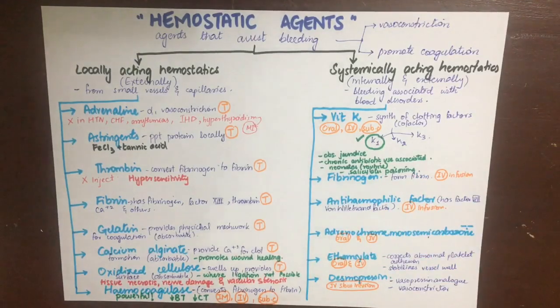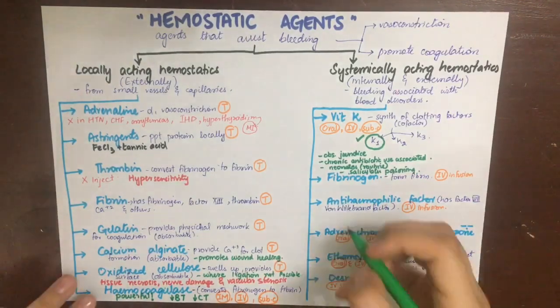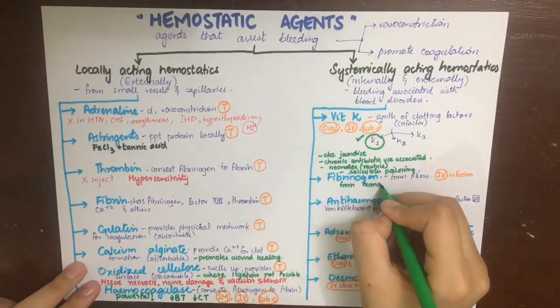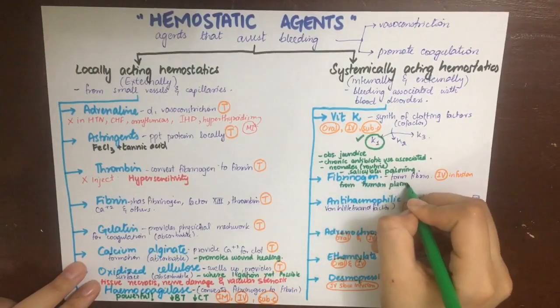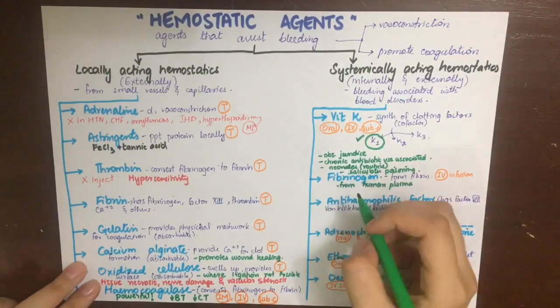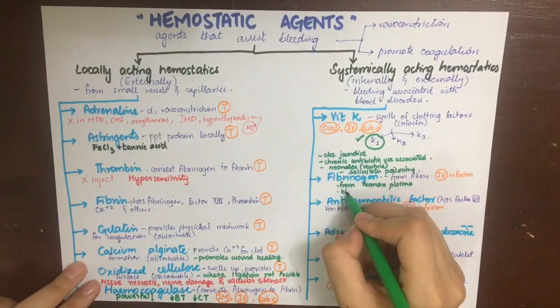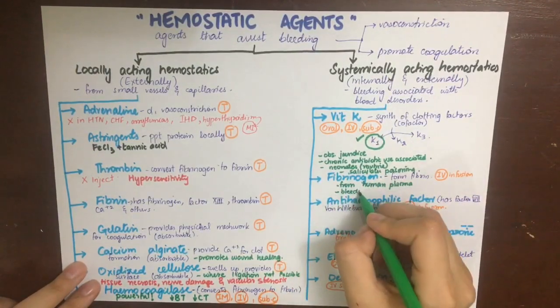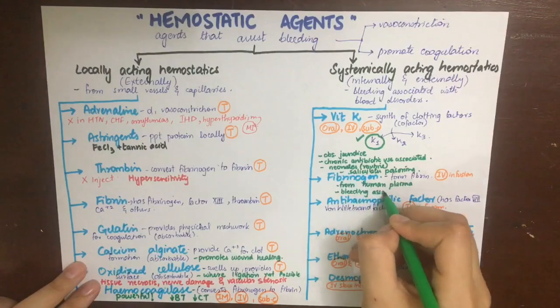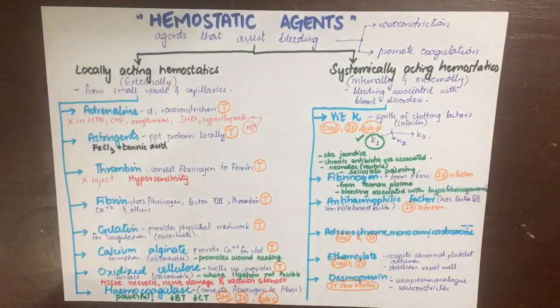Fibrinogen is basically a human plasma derivative and can be used to control bleeding associated with hypofibrinogenemia.